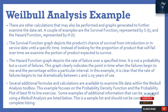The hazard function graph clearly indicates the point in time when failures begin to rise and the percentage within a particular interval. In this example, it is clear that the rate of failures begins to rise dramatically between 2 and 2.05 years of use. Several additional formulas and calculations are available to examine life data within the Weibull Analysis toolbox. This example focuses on the probability density function and the probability plot of best fit to line exercise.